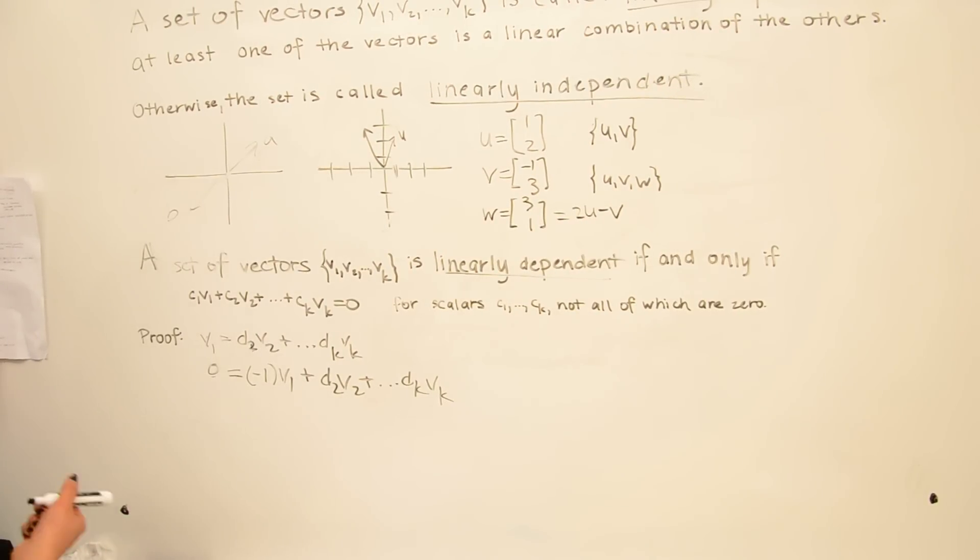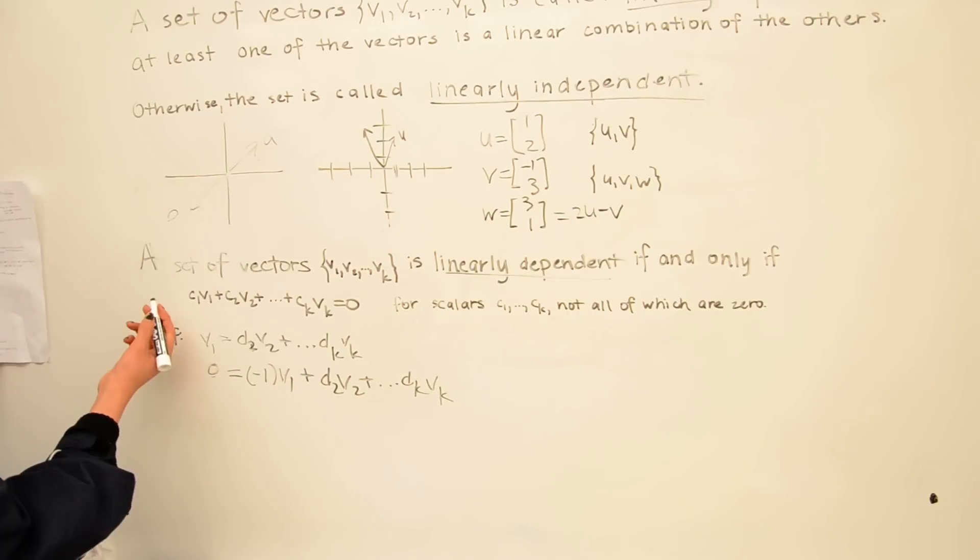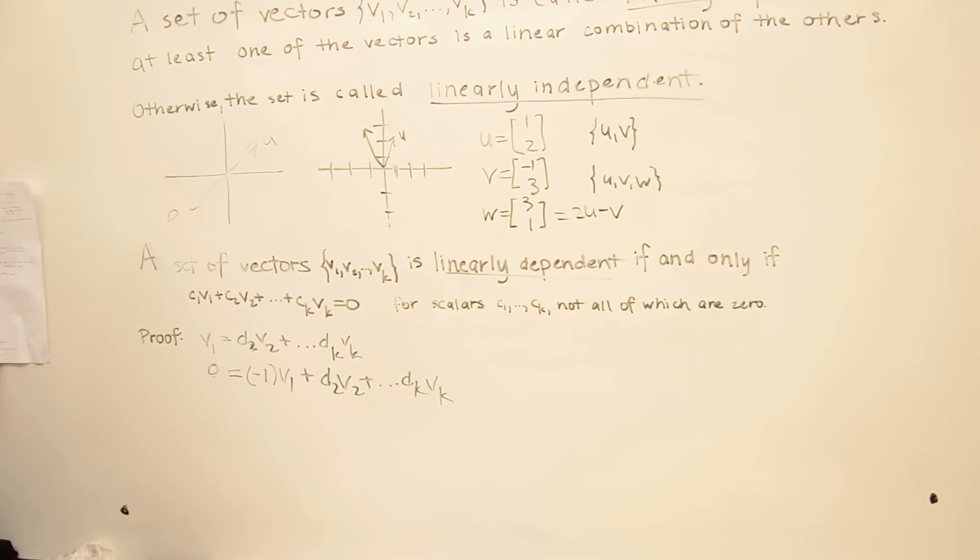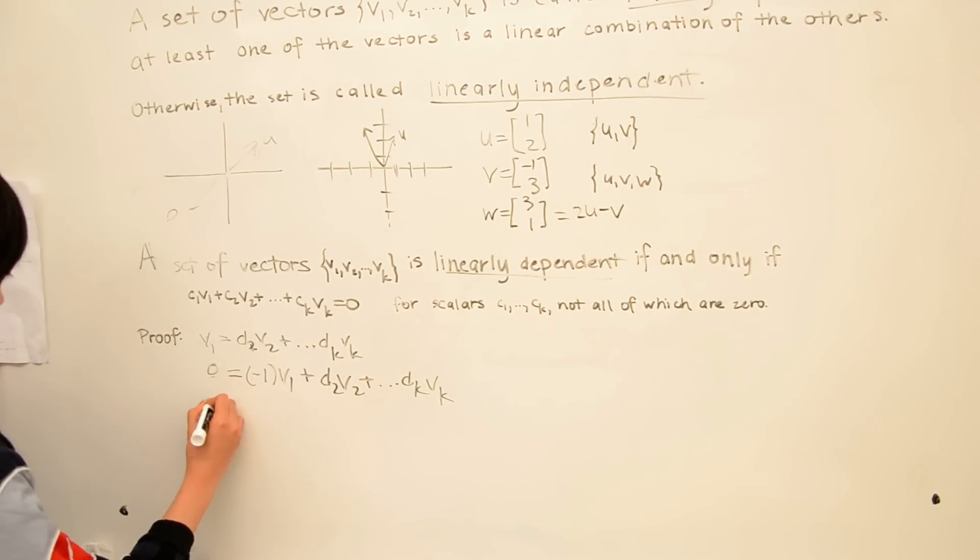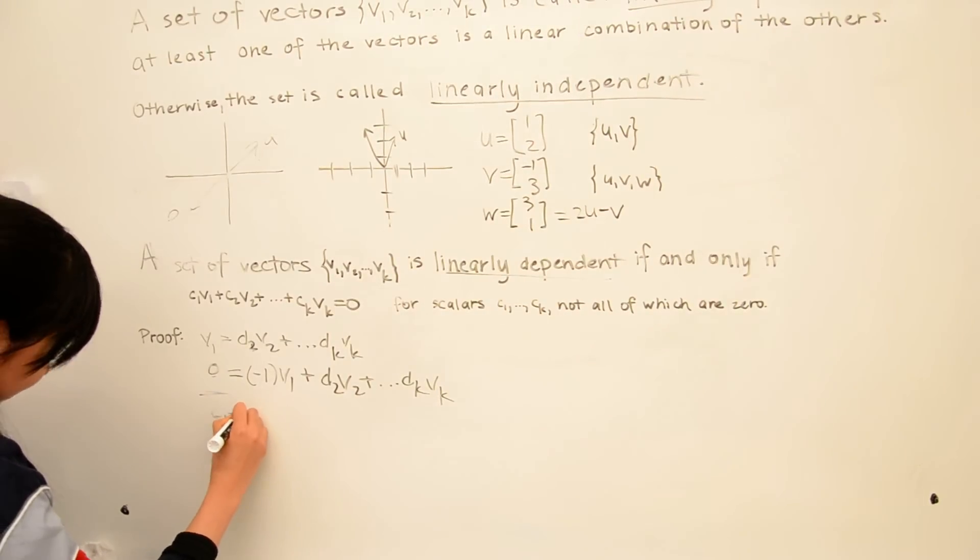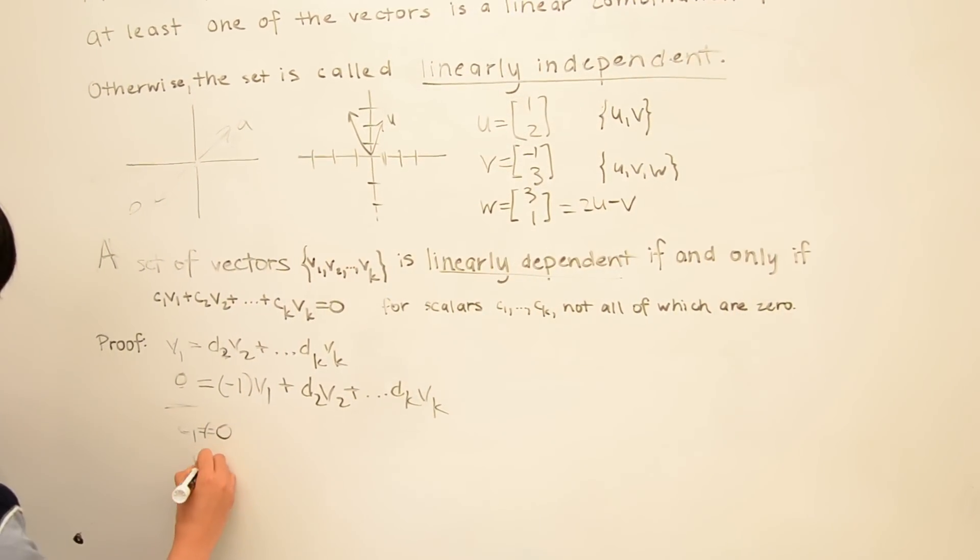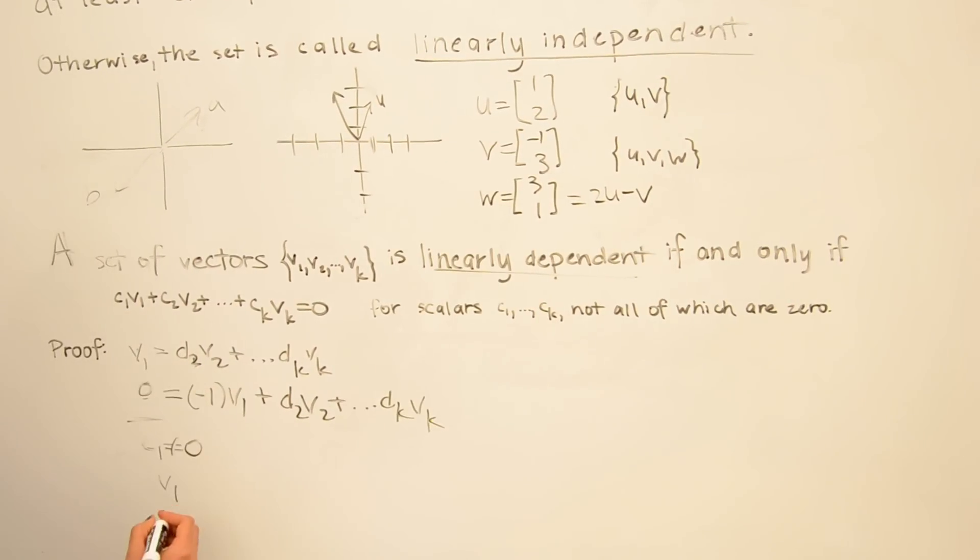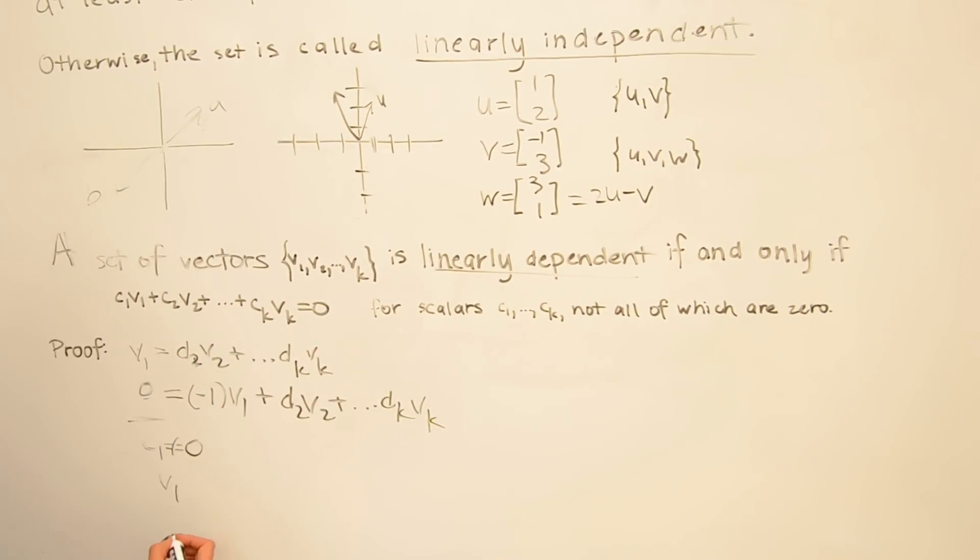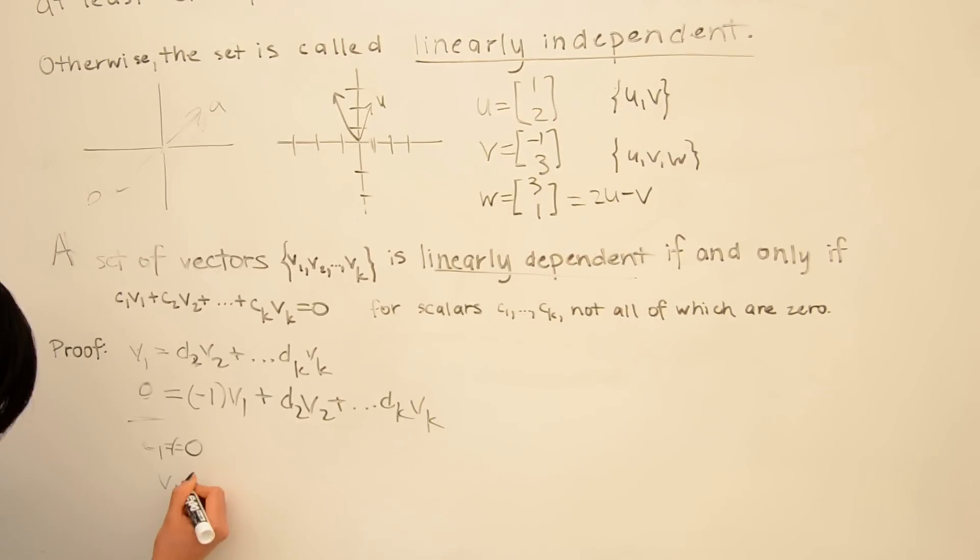And in the other direction, suppose that this equation holds true with at least one non-zero coefficient. So say c1 does not equal 0. Then we can solve for v1, solve this equation for v1, so move all the other terms to the other side and divide by c1.